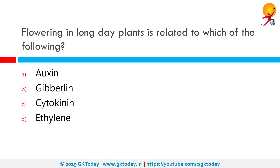Flowering in long day plants is related to which of the following? The correct answer is gibberellins. Gibberellins or GAs are plant hormones that regulate various developmental processes including stem elongation, germination, dormancy, flowering, flower development, and leaf and fruit senescence.